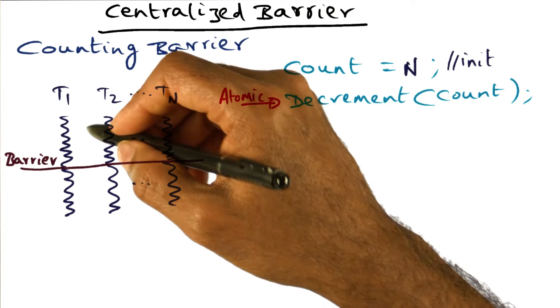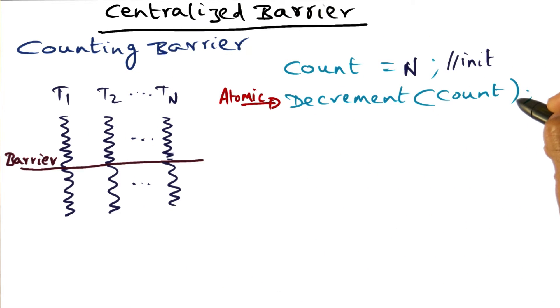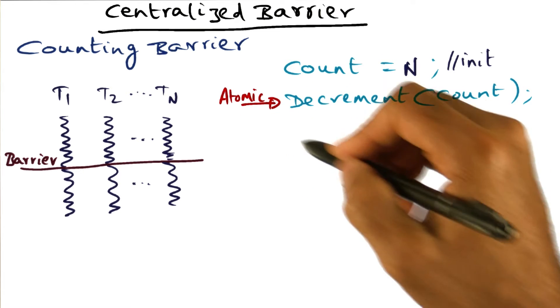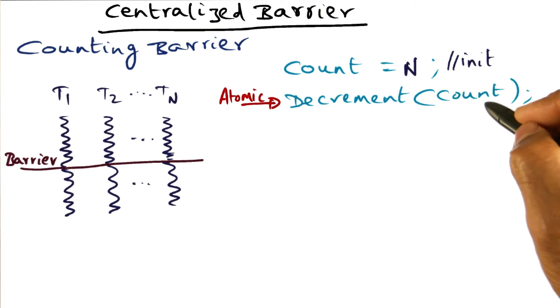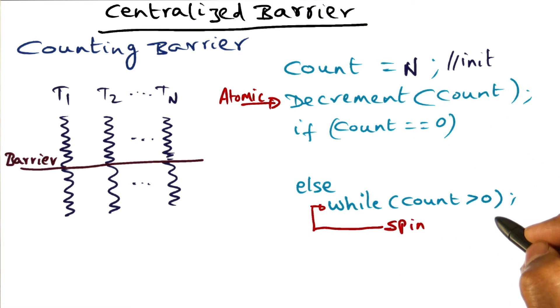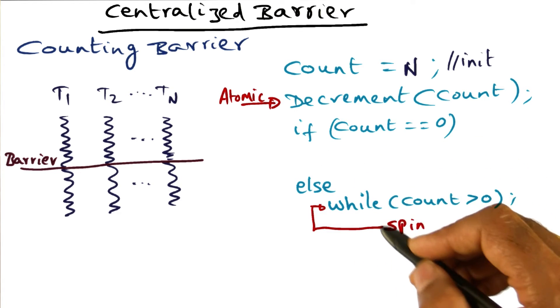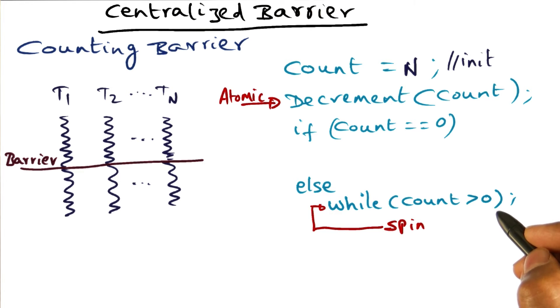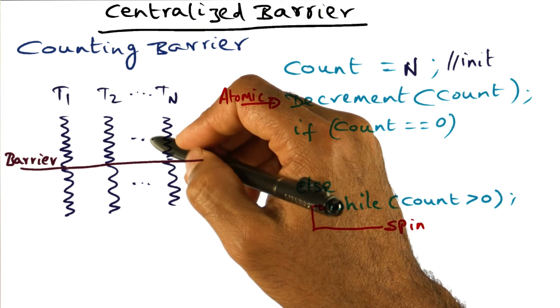What is going to happen is that when a thread arrives at the barrier, it's going to atomically decrement the count. The key thing is it has to be done atomically. Once it has atomically decremented the count, then it's going to wait for the count to become zero. So long as the count is not zero, it's going to wait. If the count is not zero, that means I have arrived at the barrier but I don't know where the others are yet, so I'm going to wait.